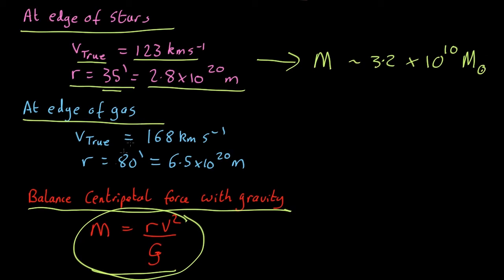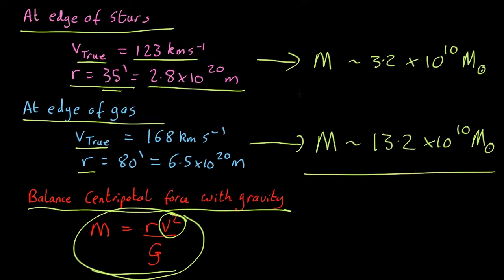When we go out to the edge of the gas, r is larger, and v is larger, so we're bound to get a much bigger number, especially because of the increase in v, because you've got v squared in here. So we end up with a mass of 13.2 by 10 to the 10 solar masses. Okay, so there's our answer. Let's go and see what Brian got.